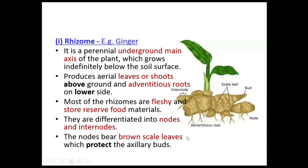An example of a rhizome is ginger. The edible part below ground is not actually a root — it is a modified stem. You can see nodes, internodes, scaly leaves, and adventitious roots. Above ground you get shoots. This is a natural vegetative propagation example — to multiply ginger, simply take a fleshy piece and sow it in sand or soil, and it will multiply easily.